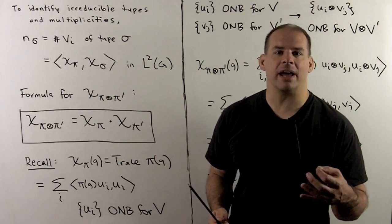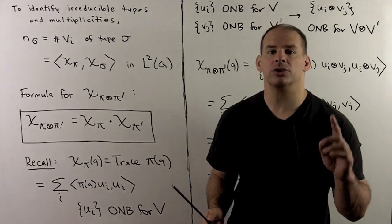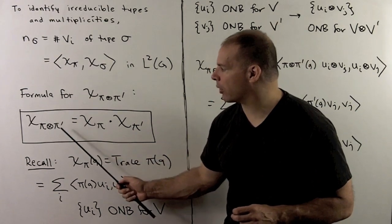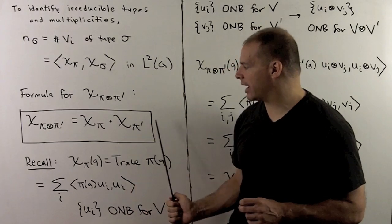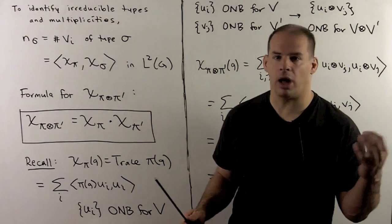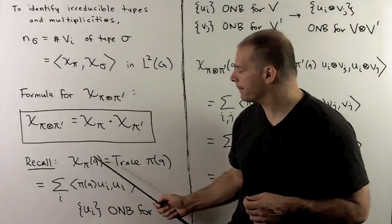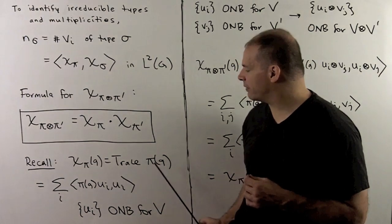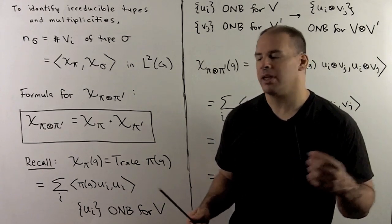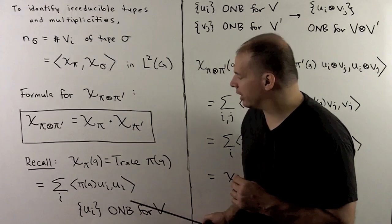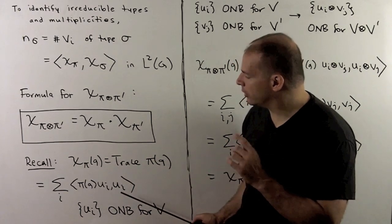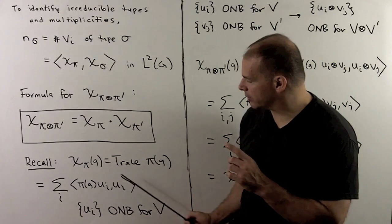That means I need to know how to find the character of a tensor product. The rule is: if I take the character of pi tensor pi prime, we just take the product of the characters. To see this, recall the definition of the character of pi — that's just going to be given by the trace of pi(G). If we choose an orthonormal basis u sub i for V, we use this formula: we sum over the basis and take each matrix coefficient using basis vectors with themselves.